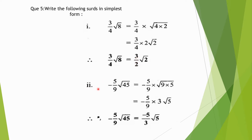Second question: minus 5 by 9√45. That is equal to minus 5 by 9 multiplied to square root of 9 multiplied to 5. 45 can be written as 9 multiplied to 5. So square root of 9 will be taken as 3. So minus 5 by 9 multiplied to 3√5. 3 and 9 can be cancelled. We get minus 5 by 9√45 is equal to minus 5 by 3 multiplied to √5.